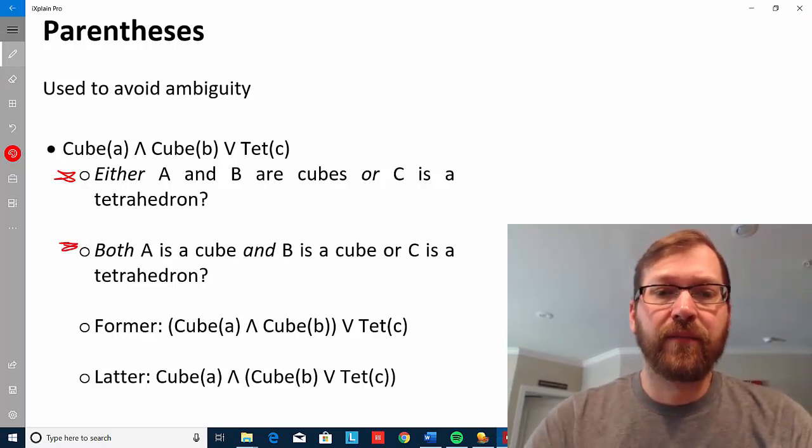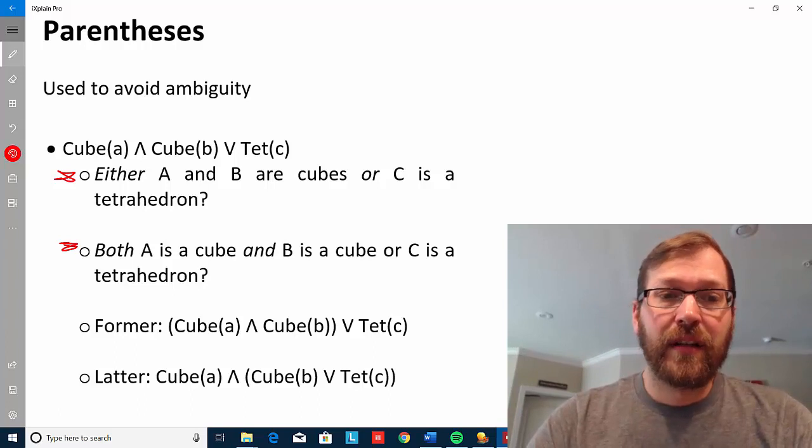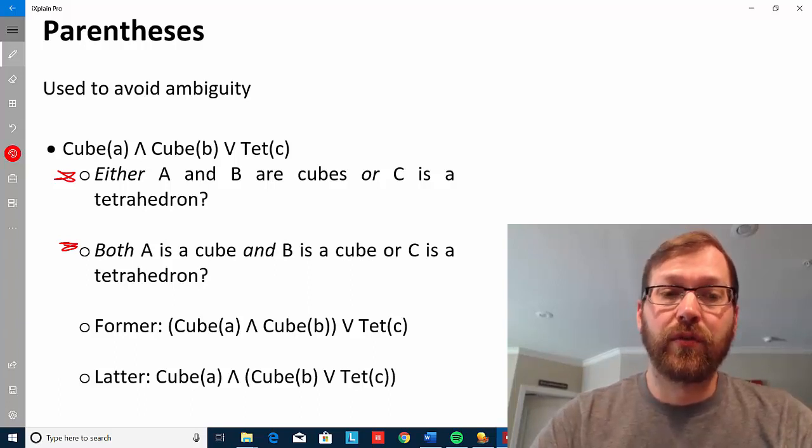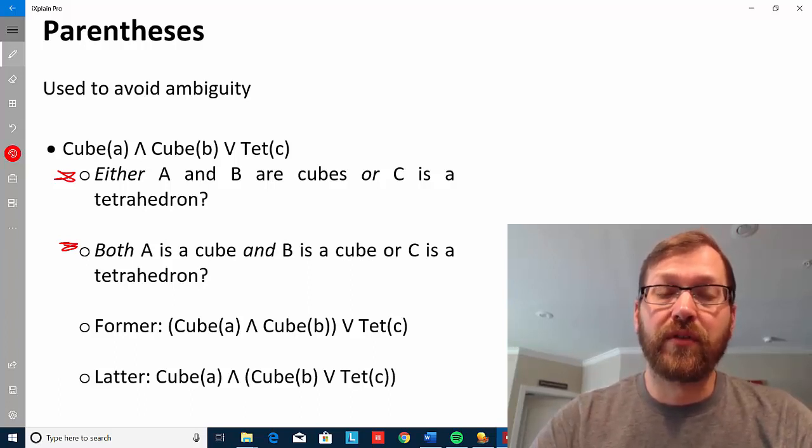So in that first way, it says either A and B are cubes or C is a tetrahedron. So at least one of those is true, that either it's true that A and B are cubes or it's true that C is a tetrahedron or both of those statements are true.